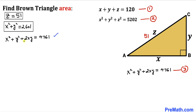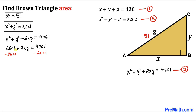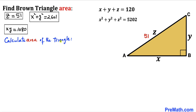Focusing on equation three: X squared plus Y squared plus 2XY equals 4761. We already found X squared plus Y squared equals 2601, so substituting gives 2601 plus 2XY equals 4761. Subtracting 2601 from both sides gives 2XY equals 2160, and dividing both sides by 2, our X times Y value turns out to be 1080.